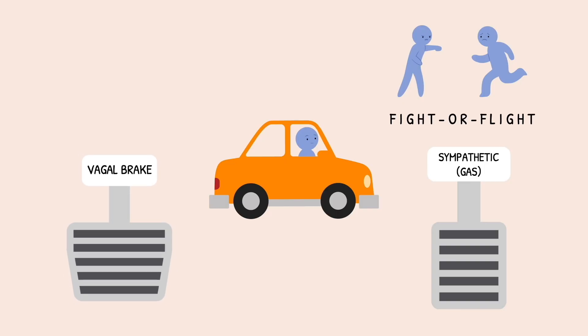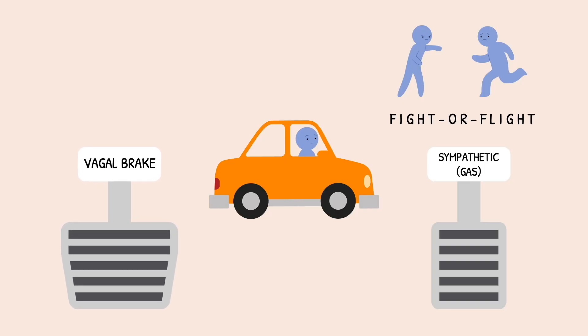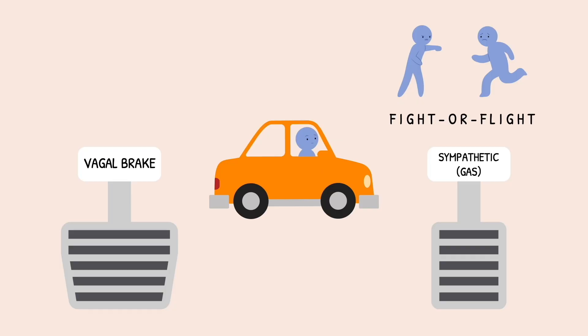In contrast, the vagal brake slows things down, helping to keep the body safe and regulated. Pressing the brake lowers heart rate, reduces stress signals, supports rest and digest, and promotes social engagement. However, if the brake is applied too strongly, the body may become sluggish or disengaged.